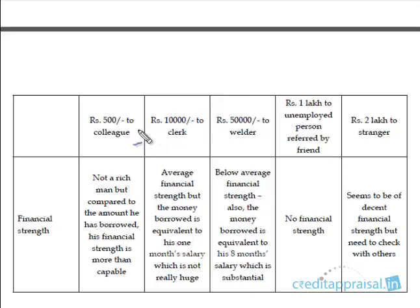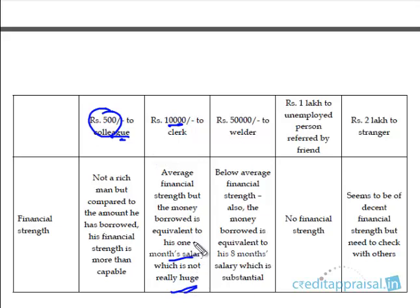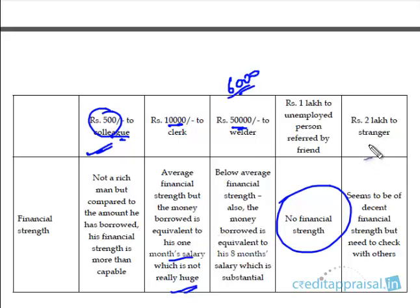What about financial strength? Your colleague's financial strength is more than capable for the small 500 loan. The clerk borrowed 10,000, which equals his full monthly salary — not negligible. The neighbor borrowed 50,000 against a take-home of only 6,000 after installments — that's nearly 8–9 times his effective income. The unemployed person has no financial strength at all, having yet to start his business. The stranger seems to have decent financial strength, but being a total stranger, this needs verification.